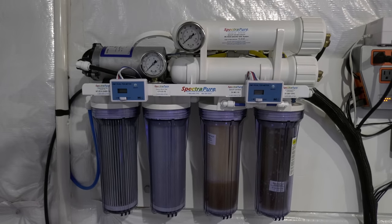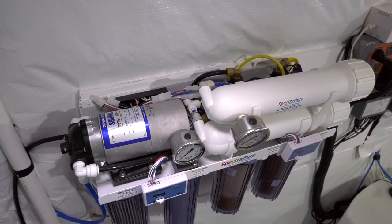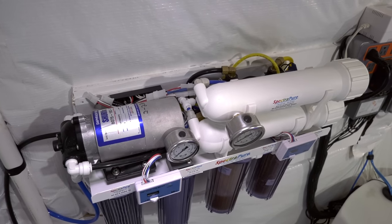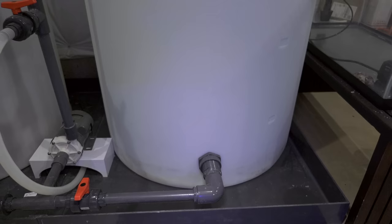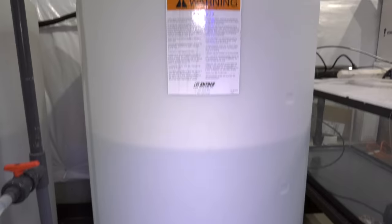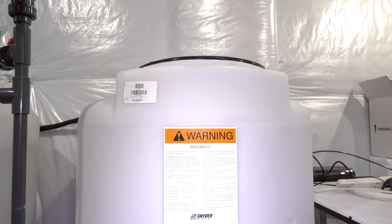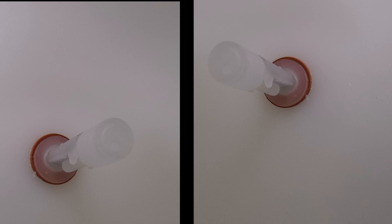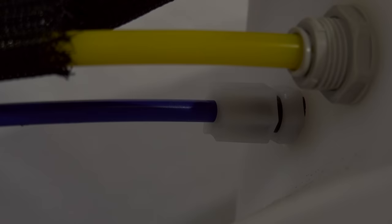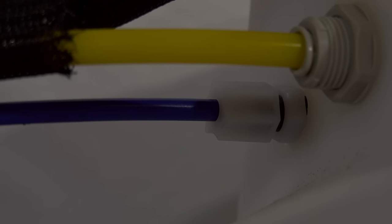Here's where the automation kicks in. This RODI unit automatically flushes the RO membranes and it turns on and off the unit based on water levels that it senses in the RODI holding tank. When water is below the lower sensor, the unit automatically turns on until the high sensor is tripped. This unit does all this from the factory, no programming is necessary. Just mount some sensors, make some quick connections, and you're off to the races.